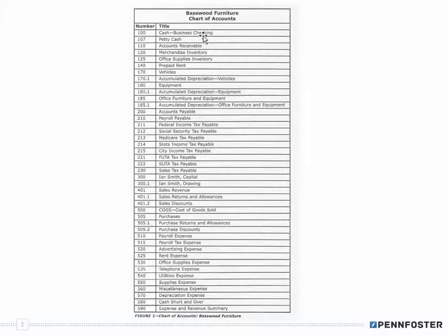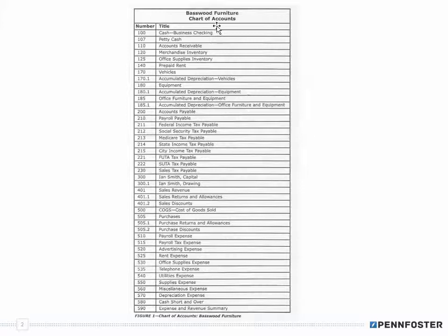From the last video, we would have a separate page, a separate account, for each and every one of these. There are about 30 of them here, so you would have 30 or more pages of general ledger accounts, and each one would be listed singularly. Notice that you don't see the balance — that's because this is nothing more than a table of contents.